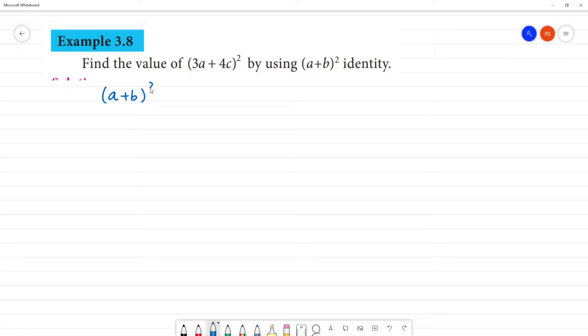So (a + b)² whole square, we have the formula: a² plus 2ab plus b².